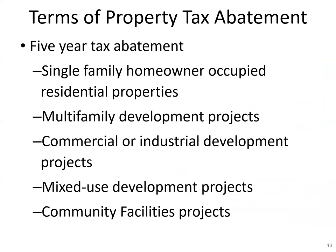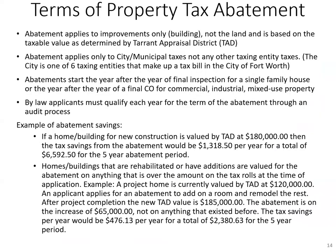In terms of property tax abatement, all abatements in the NEZ are five-year abatements, for single-family homeowner-occupied residential projects, multi-family development, commercial or industrial development projects, mixed use, and community facilities projects. The abatement applies only to the building or the improvements, not the land. It's based on the taxable values determined by Tarrant Appraisal District. The abatement applies only to city or municipal taxes, not any other taxing entity's taxes. Since we are one of six taxing entities that make up a tax bill in the City of Fort Worth, we cannot abate anyone's taxes but our own. The abatements start the year after the year of final inspection for a single-family home, or the year after the year of the final CO for commercial, industrial, or mixed-use property.